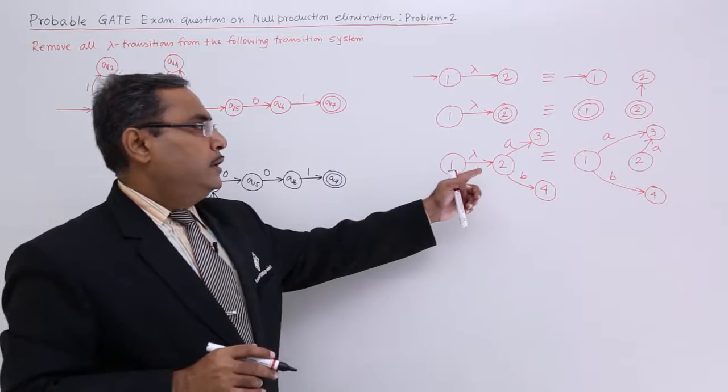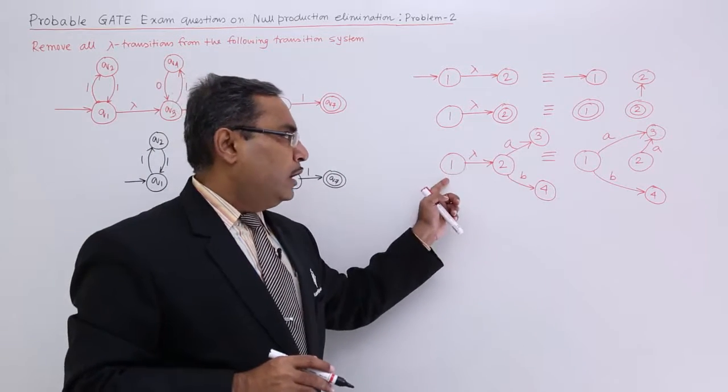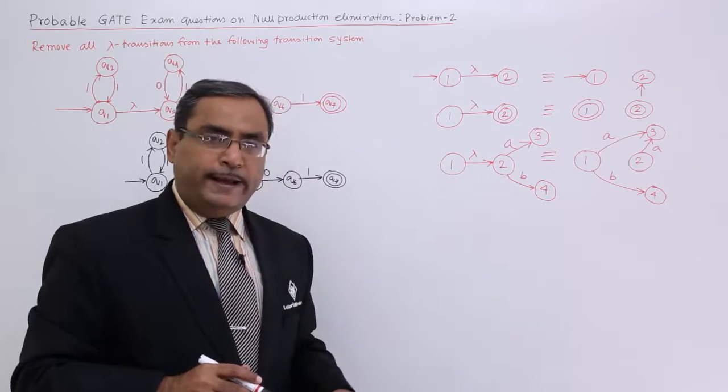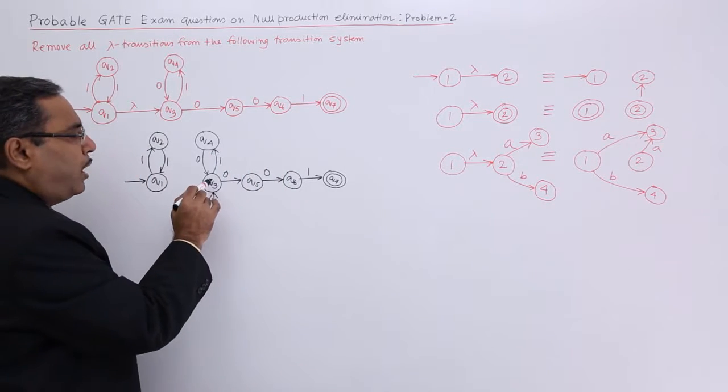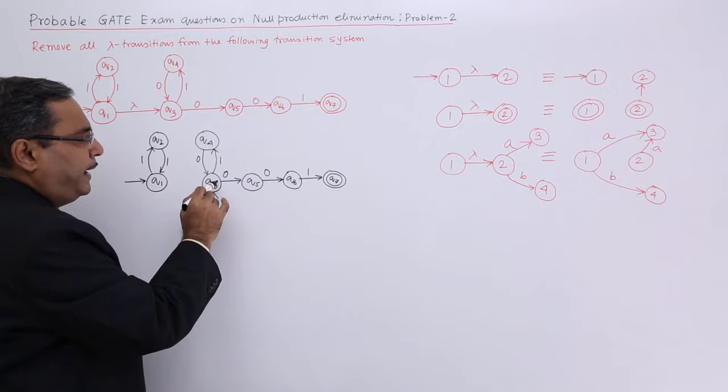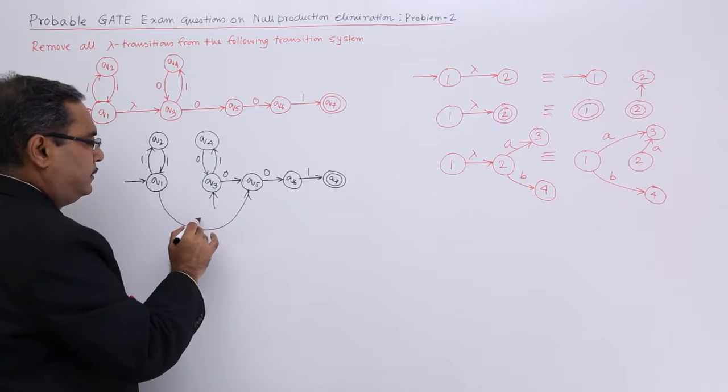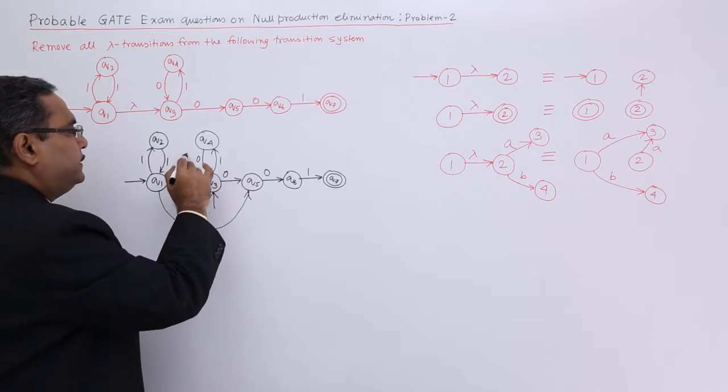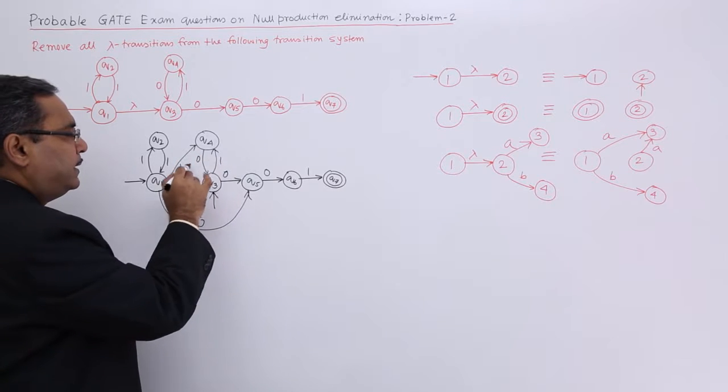Now the third one: all outer edges will be drawn from 1 with the same label to the same next state. Here we are having 2 outward edges. So I will be drawing one edge like this and another edge like this with the same label.